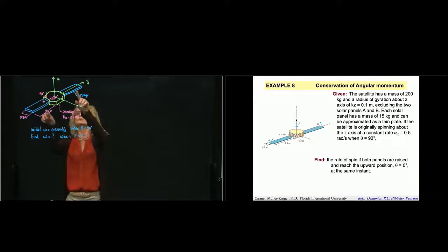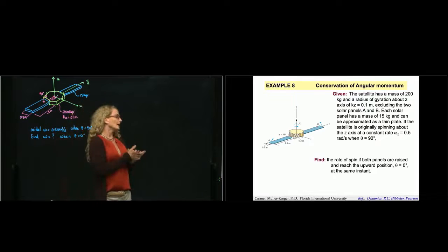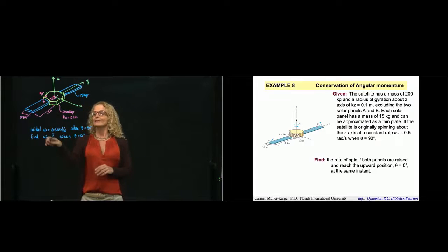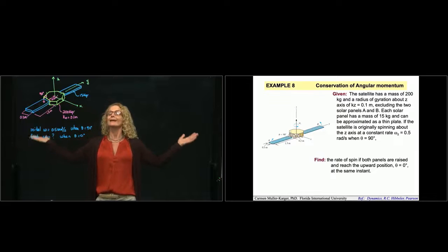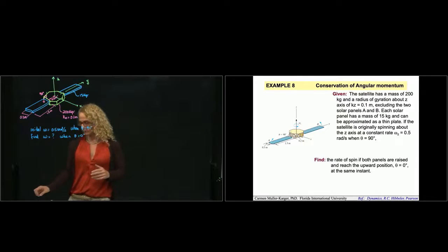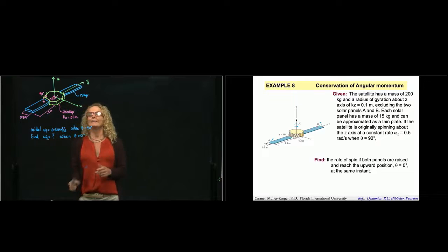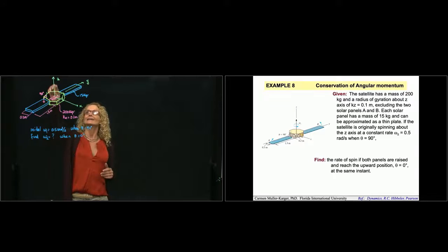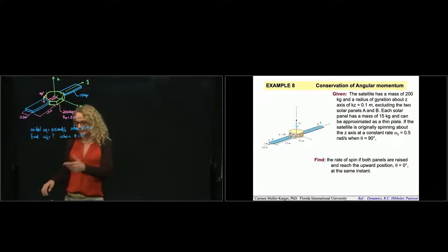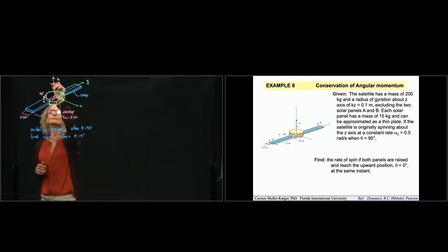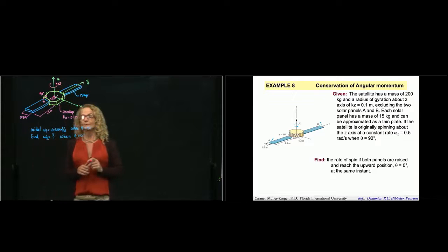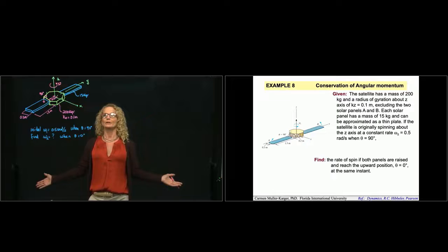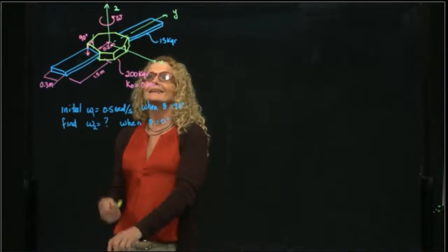We have two panels, each with a mass of 15 kilograms, and we are given the dimensions of those panels. We need to find, given the angular velocity when the panels are extended (position 1), the angular velocity when the panels are retracted (position 2). When extended, there is a 90-degree angle between the panels and the axis of rotation C. When retracted, the arms go to 0 degrees.